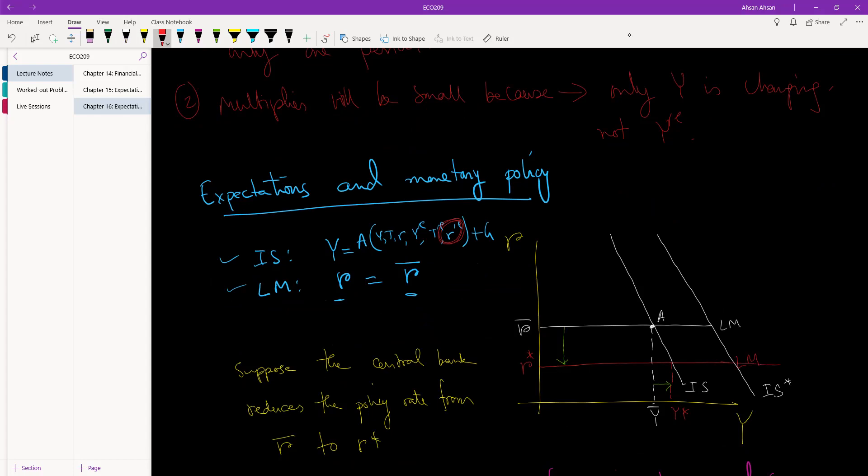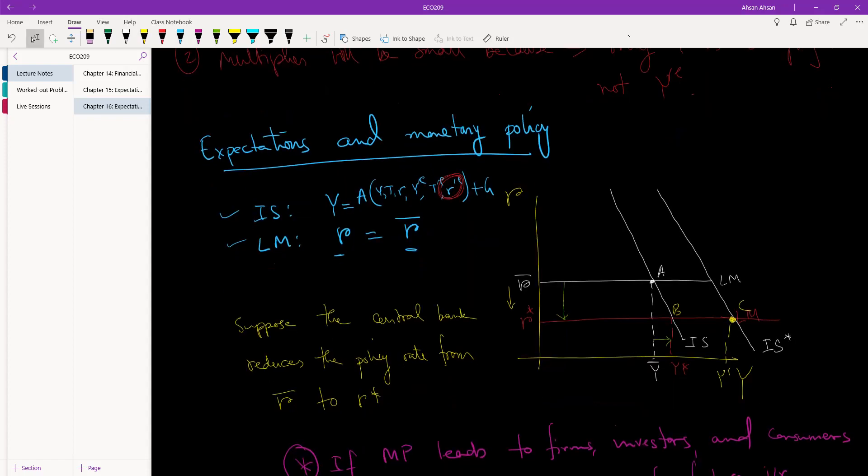So this is our new IS curve. This was the new IS1, so we have a new equilibrium at this point. We were at A, then we moved to B, now we've moved to C, where this is the new output. So you see that by reducing the policy rate from R bar to R star, government was able to increase the output from Y bar to Y prime. But this only happened because the government was also able to modify people's expectations.